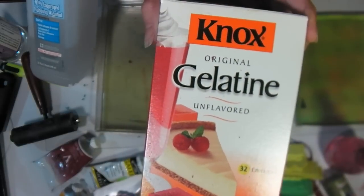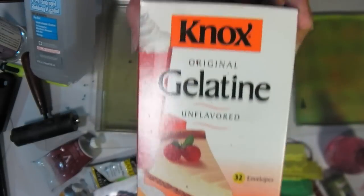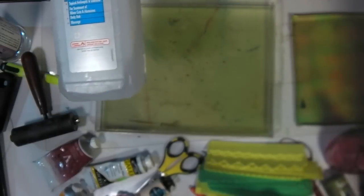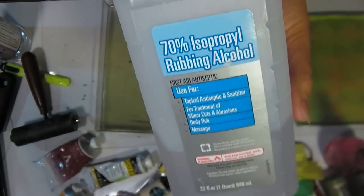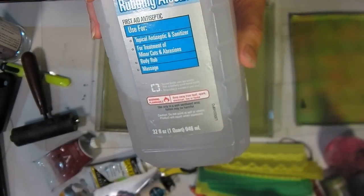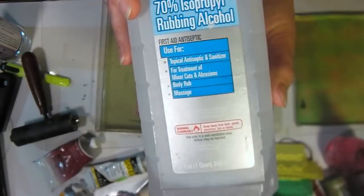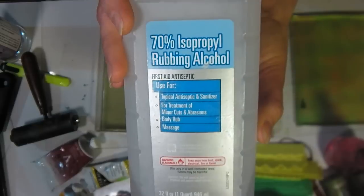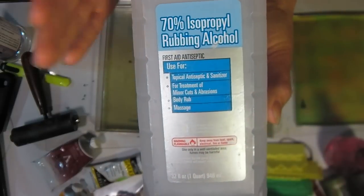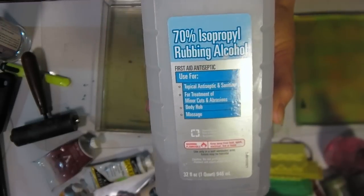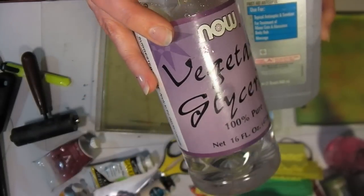I used four packets of gelatin, which is roughly four tablespoons. I used one and a half cups of water, I used one cup of alcohol, rubbing alcohol, just from your medicine cabinet, and I used half a cup of glycerin.